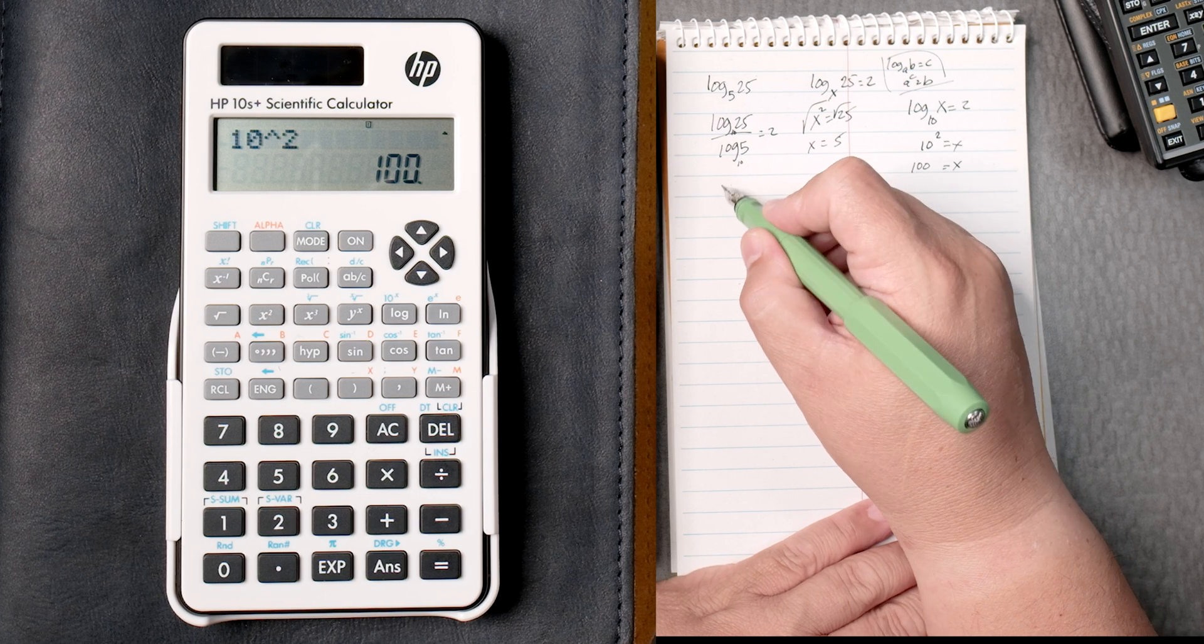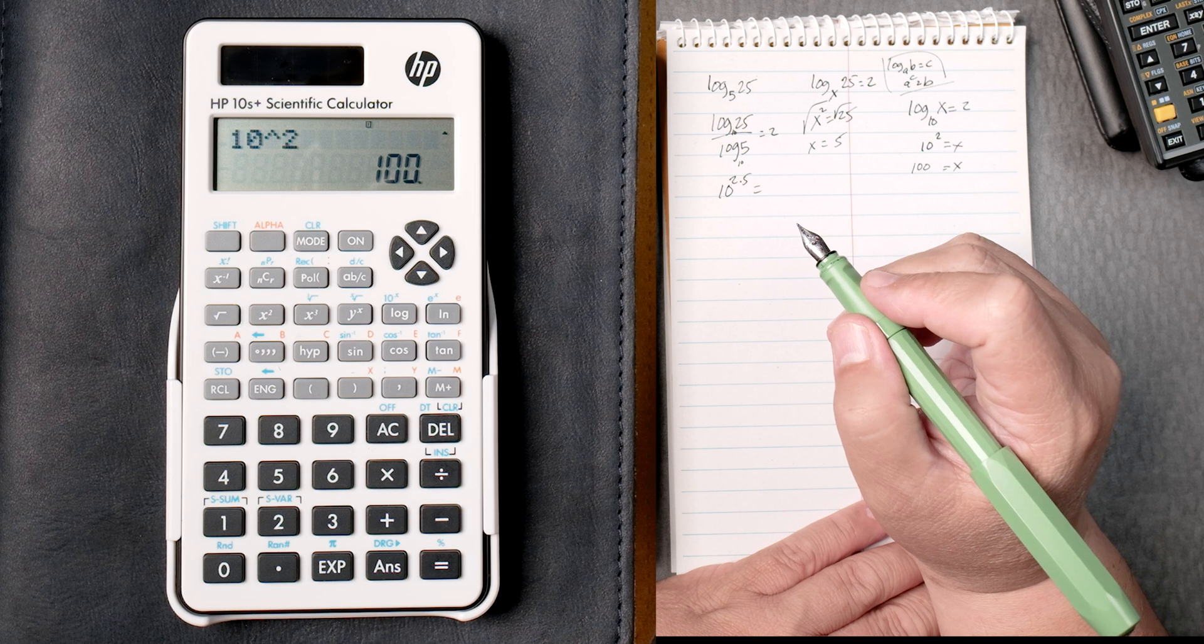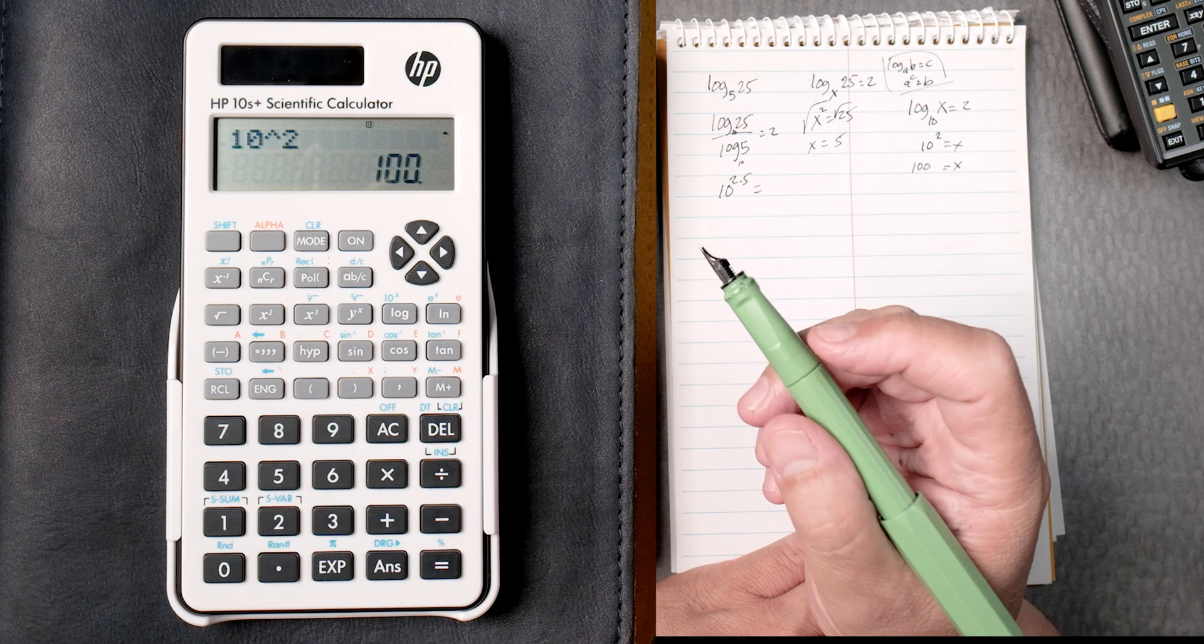Let's do some antilogs like 10 to the 2.5. If we look at the log key.